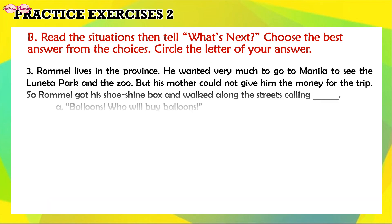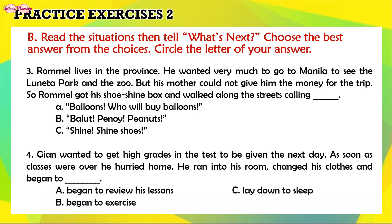3. Rommel lives in the province. He wanted very much to go to Manila to see the park and the zoo. But his mother could not give him money for the trip. So Rommel got his shoe shine box and walked along the streets calling — A. Balloons, who will buy balloons? B. Peanuts. C. Shine, shine shoes. What is your answer?